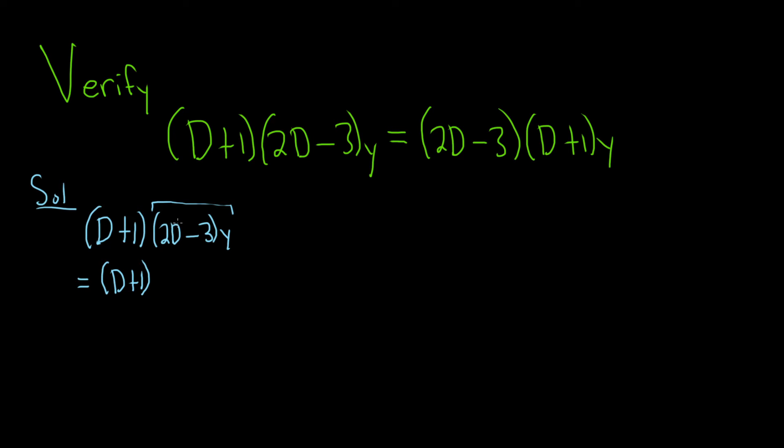The way to do this is take 2D and apply it to y. That would be 2 times the derivative of y because big D means take the derivative. So this is 2y prime, and then distribute the minus 3 to y, so minus 3y. There's no derivative there, so it's just regular multiplication.